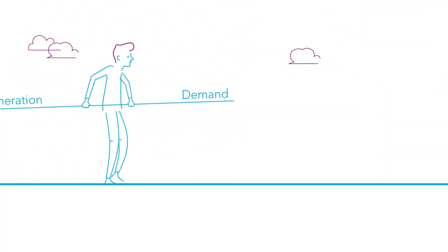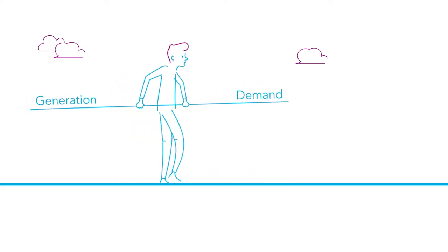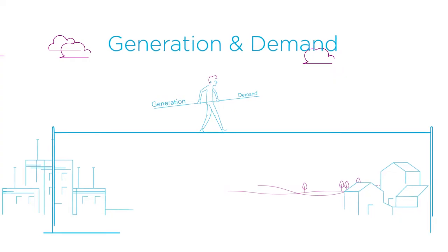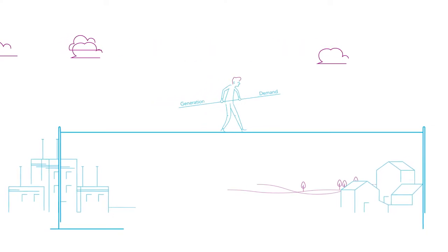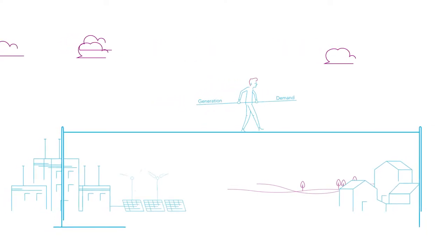A well-operated electrical grid is a balanced system. Generation and demand constantly vary and we have to keep the system balanced all over Europe and ensure it operates at the correct frequency at all times.